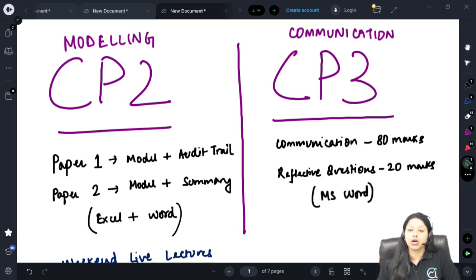So CP2 is a modelling paper. There are two papers, Paper 1 and Paper 2, which generally happens on two consecutive days. Both of them have modelling, Excel part and the MS Word part. In case of Paper 1, you will be given a scenario and a few questions. You have to model the entire thing on Excel.